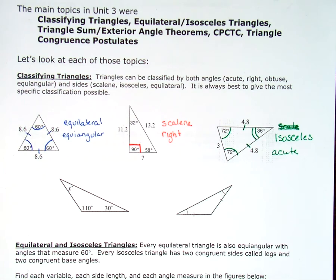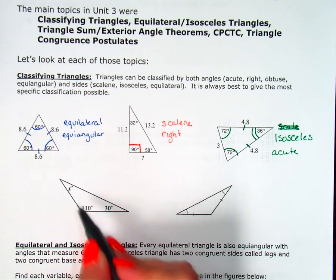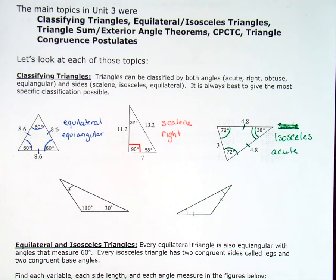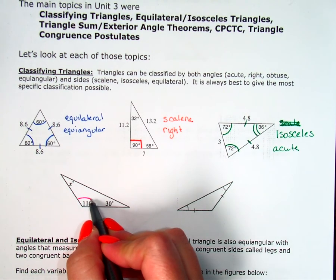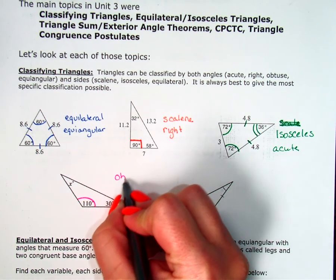When I look at the next one, at first it looks like it's going to be scalene because none of my sides are marked congruent. And so if they were marked, if I had congruent sides, they should be marked congruent for me. I can see that I do have one obtuse angle, so I know this is an obtuse triangle.